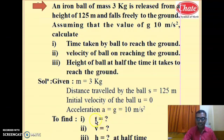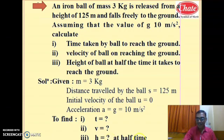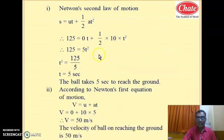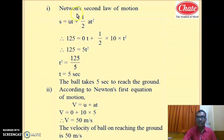What we have to find: first, the time taken by the ball to reach the ground, that is t. Second, the final velocity of the ball on reaching the ground. Third, the height of the ball from the ground at t/2 — that half-time position. For the first parameter, as the distance travelled by the ball is given, we use Newton's second equation of motion.